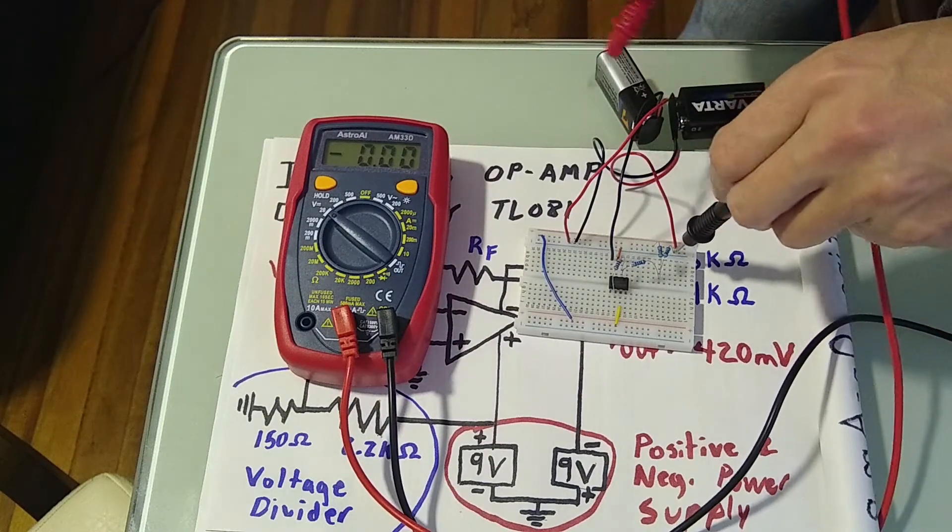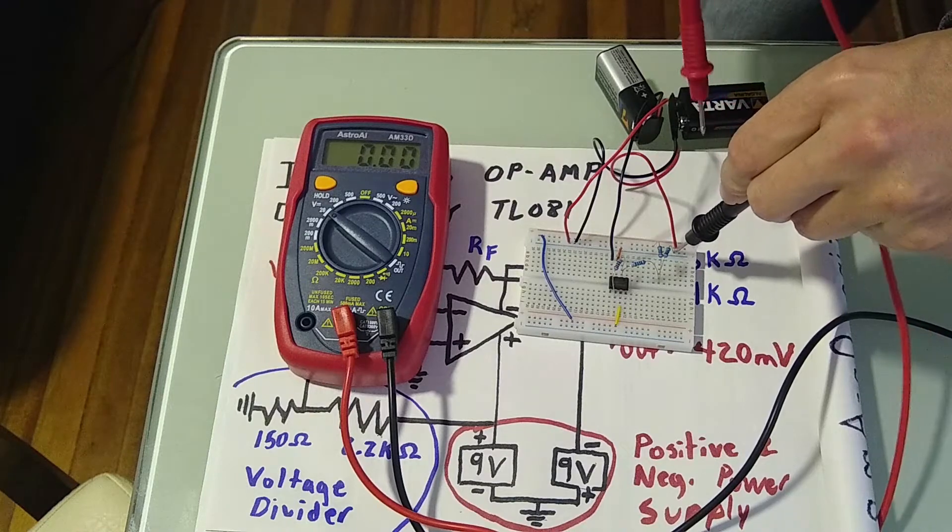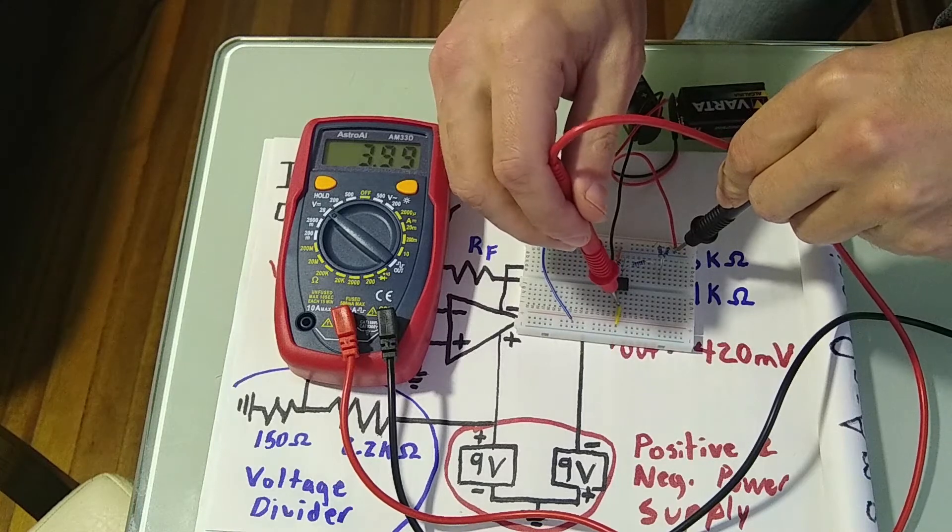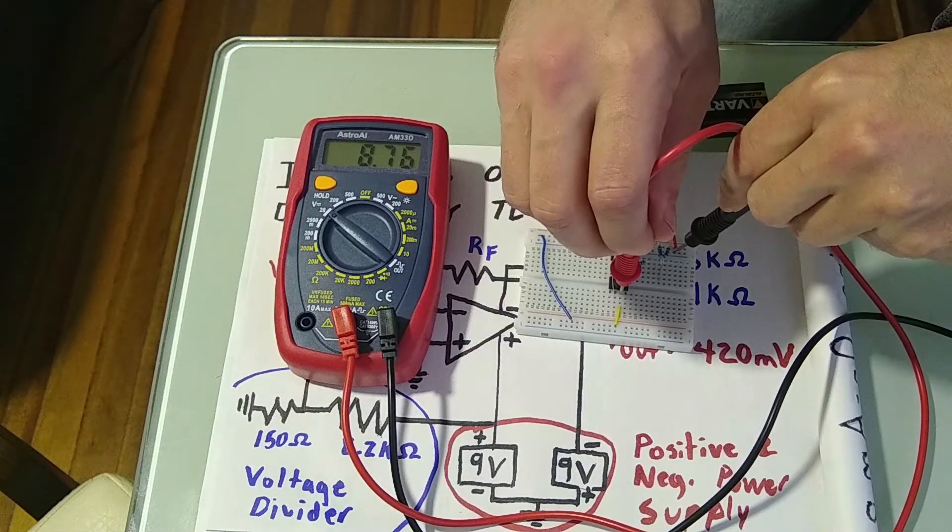OK, now to demonstrate with the breadboard. So, first of all, confirm we have to our positive power supply, 8.75 volts.